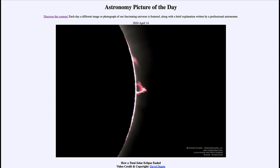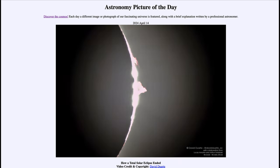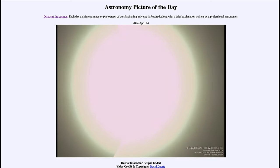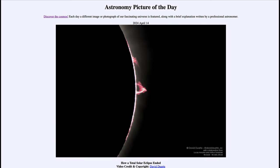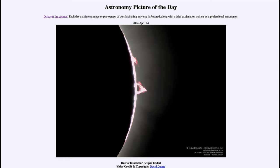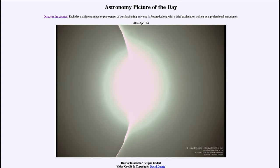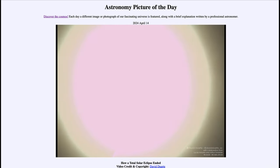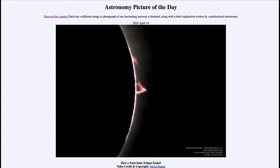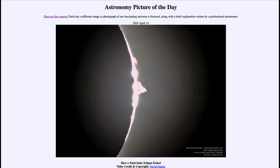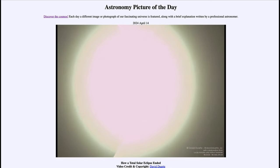And then just at the end, you start to see what we call Bailey's beads around the edge of the limb of the moon. That's the little bits of the sun peeking out through valleys on the moon. You can see that at the very beginning as the sun starts to come out. You see the prominences and then you will start to see some irregularities.